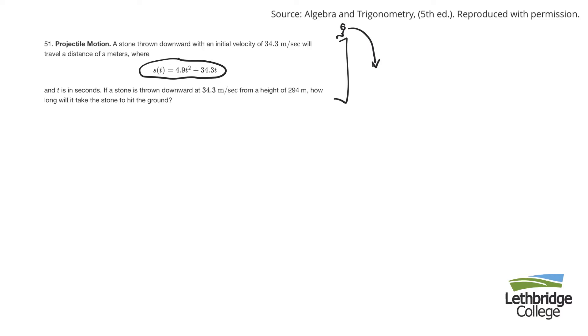And it looks like this path is a parabolic one that's defined by that function. Initial velocity, all of that stuff would be involved in the formula. Then they say from a height of 294, so I'm sitting 294 meters up, how long will it take the stone to hit the ground?